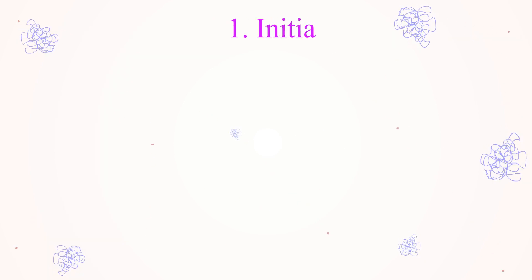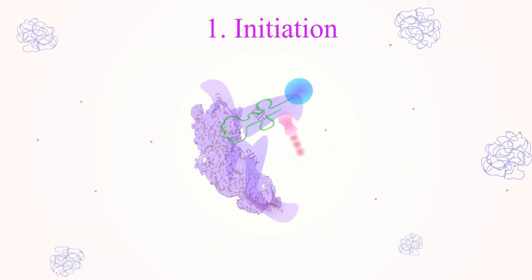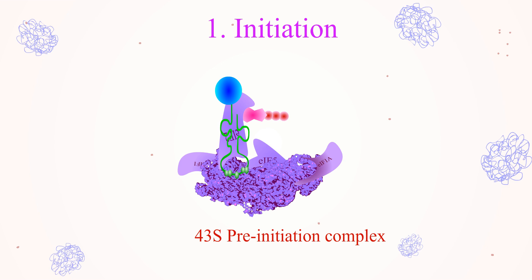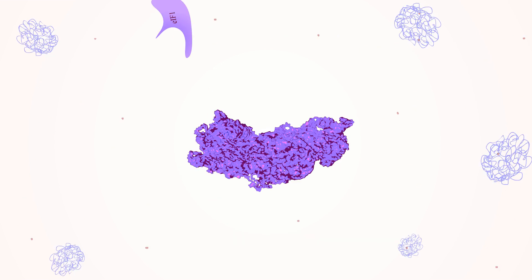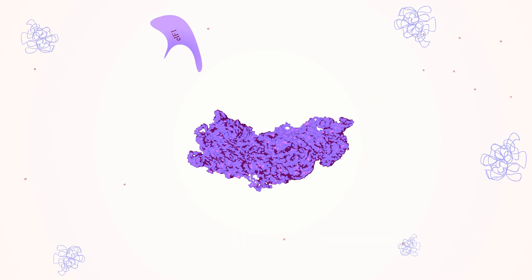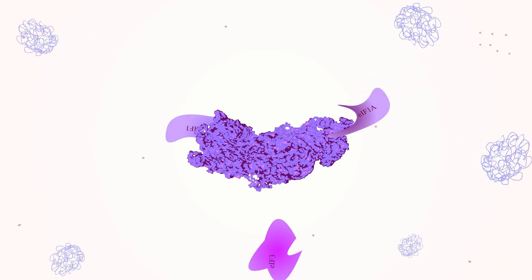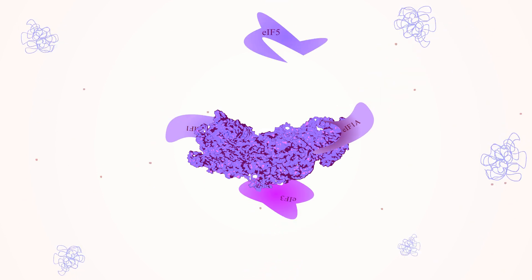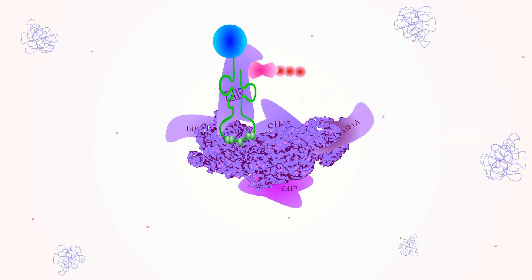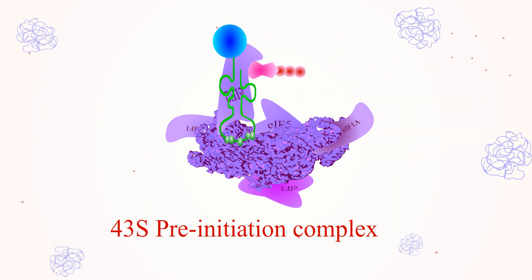Stage 1. Initiation begins with the formation of a 43S pre-initiation complex, which is formed by binding of eukaryotic initiation factor 1, eukaryotic initiation factor 1A, eukaryotic initiation factor 3, and eukaryotic initiation factor 5 to the 40S ribosome. It prevents the binding of the 60S ribosomal subunit. Eukaryotic initiation factor 2, with the help of GTP, will escort the initiator tRNA to the 40S ribosomal subunit to complete the formation of the 43S pre-initiation complex.